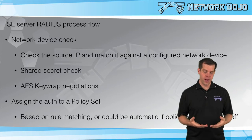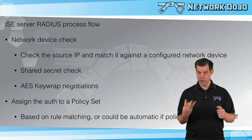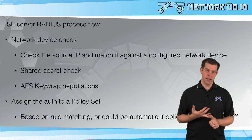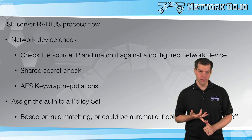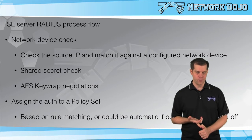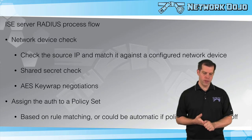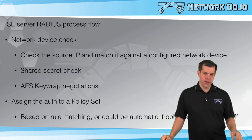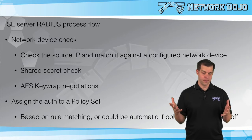So the overall ISE RADIUS process flow: starting off, the first thing that's going to happen is a network device check. This all kicks off when some device — which would be an authenticator in our RADIUS roles — sends a RADIUS request up to ISE. We have three roles: supplicant, authenticator, and authentication server. The authentication server is ISE; the authenticator is the device that talks to ISE — our 5508 controller, our 3650 switch, our autonomous AP.